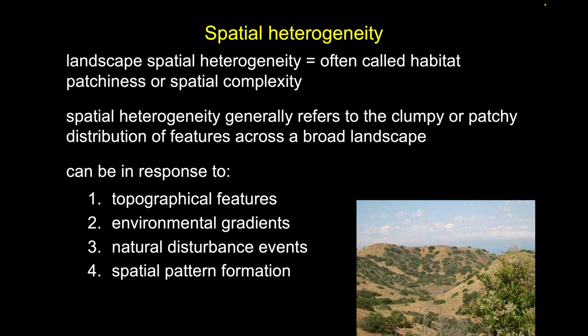We can most commonly break spatial heterogeneity down into four primary things that draw our attention and are a focus of management interventions: topographical diversity or topographical features, environmental gradients, the effect of disturbance events, and how we can generate spatial pattern formation from biological interactions.